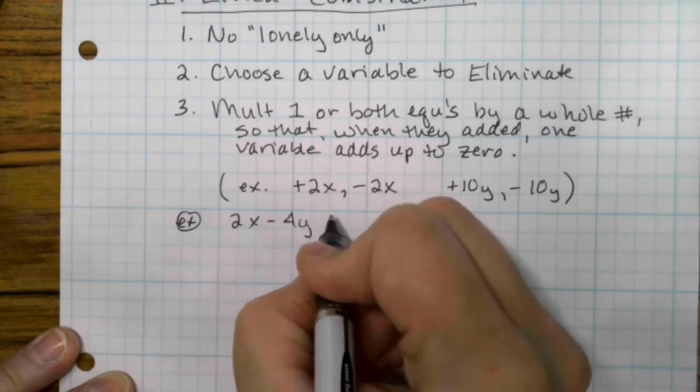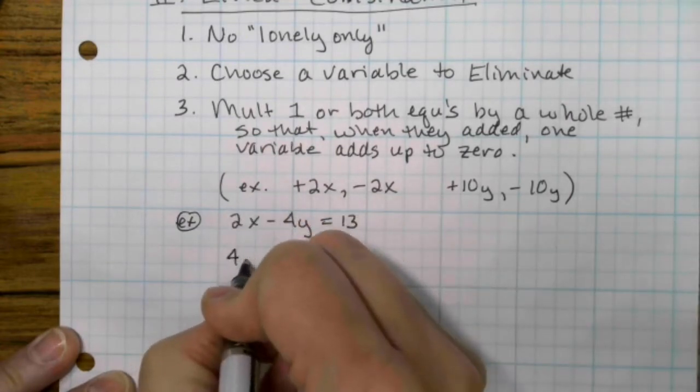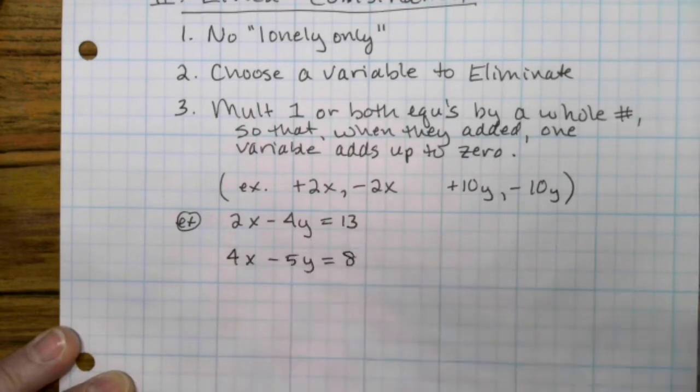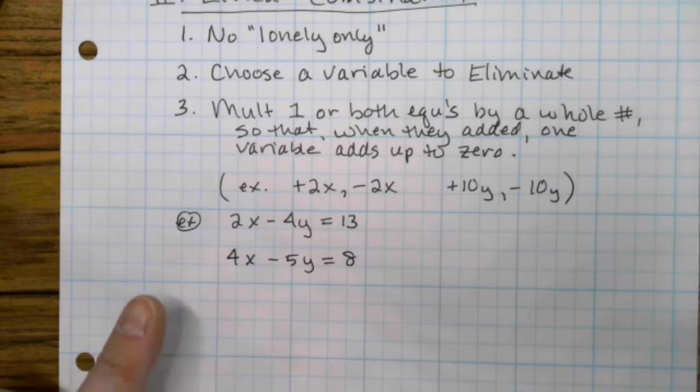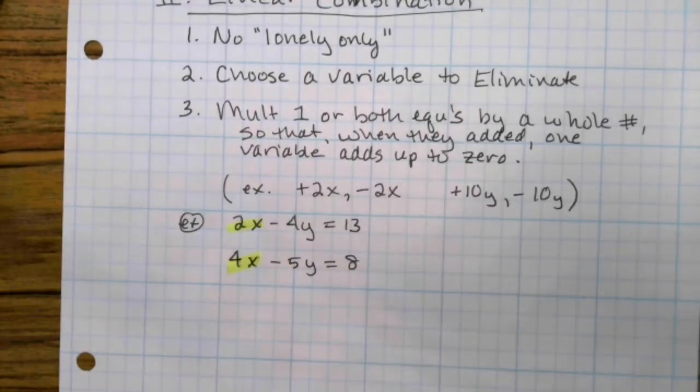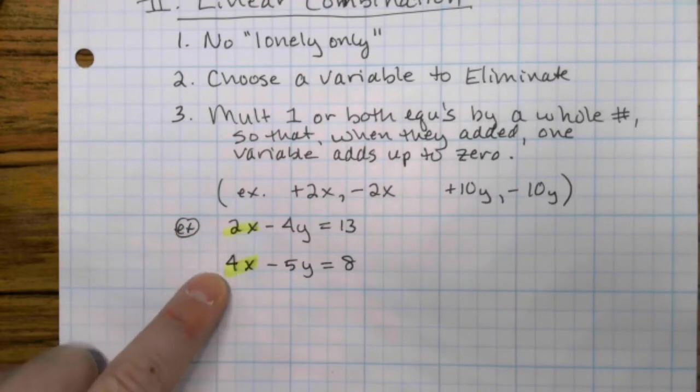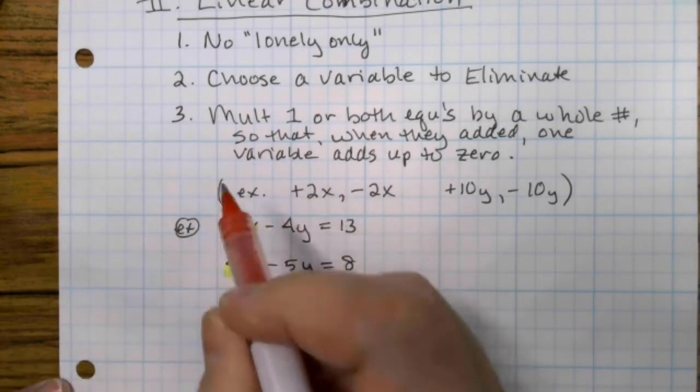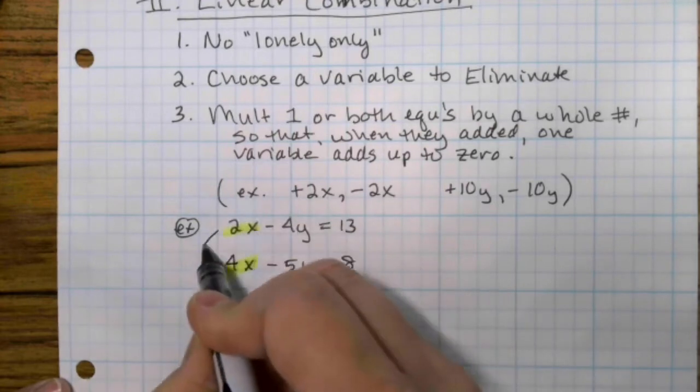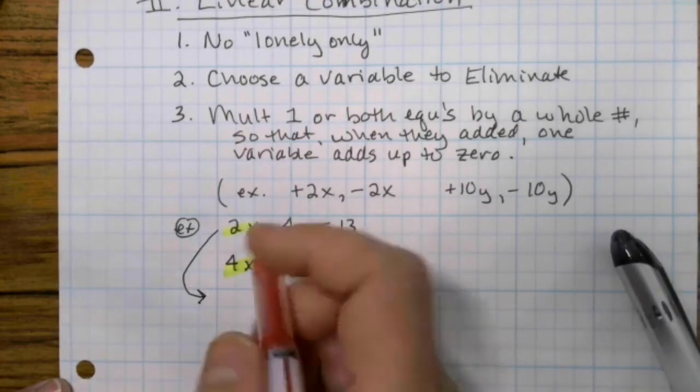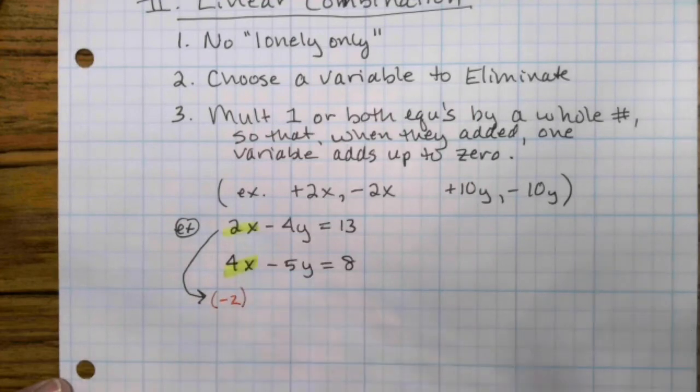2x minus 4y equals 13 and 4x minus 5y equals 8. This is a good one for linear combination because there isn't anything easy to solve for. There's no lonely only. So we're going to just start by picking what we want to eliminate. We are going to eliminate the x's. We want them to add up to zero without our numbers getting huge. So if I were to make that 2x into a negative 4x, it would add up to zero. So I'm going to take that first equation and I'm going to multiply everything in there by a negative 2.